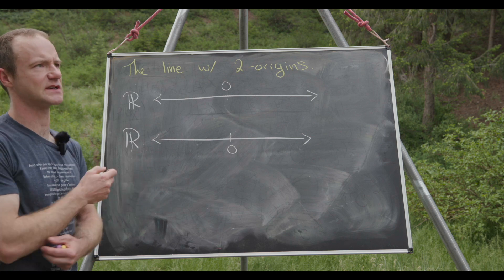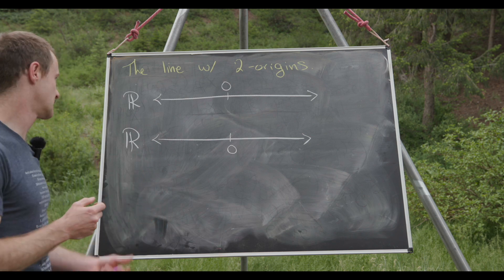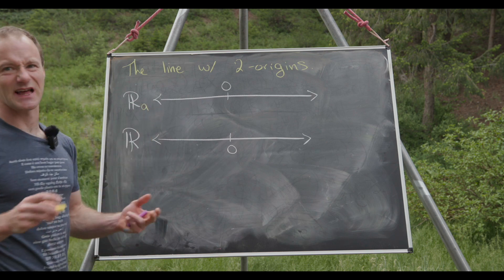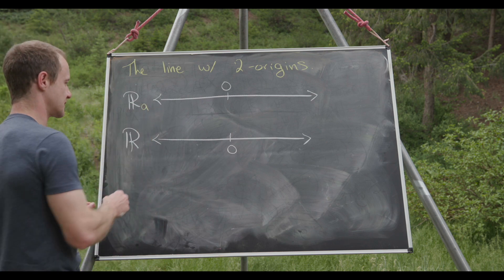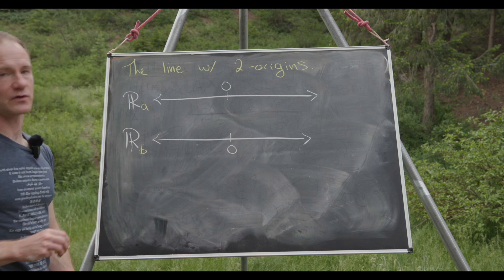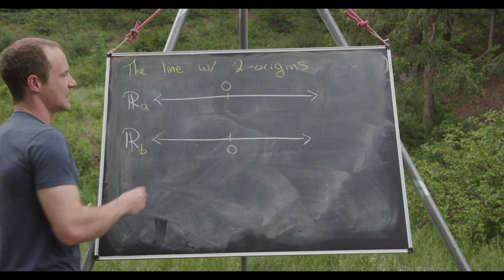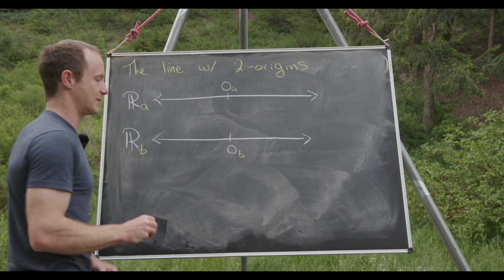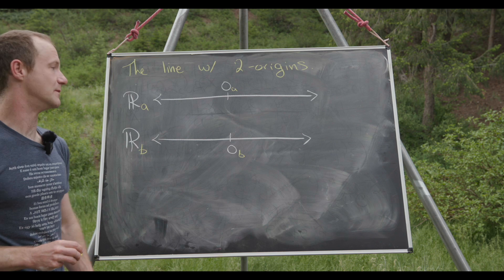And then I'm going to subscript this a little bit just for notation. I'm going to call this R sub a. So this is the a copy of the real numbers and this is the b copy of the real numbers. And then this would be the a copy of the origin, so zero sub a. And this would be the b copy of the origin, zero sub b.